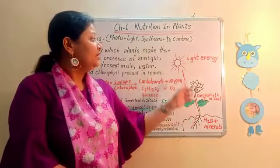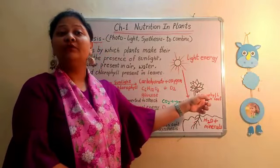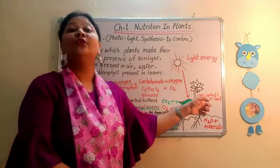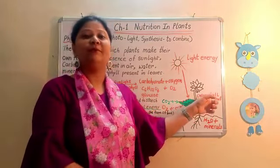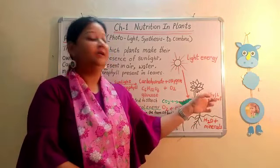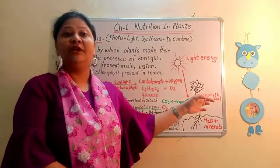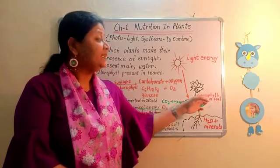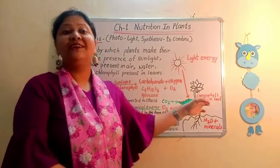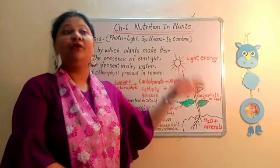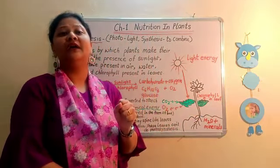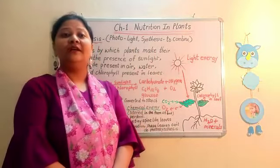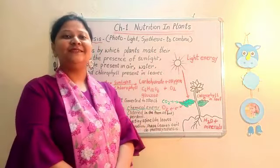Now, what is the role of chlorophyll? Chlorophyll is the green pigment present on the surface of the leaf, and this green pigment traps the energy from the sun. That is the work of chlorophyll in photosynthesis.